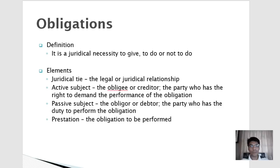First, there must be a juridical tie — the legal or juridical relationship between the active subject and the passive subject. The active subject is the obligee or creditor: the party who has the right to demand performance of the obligation. The passive subject is the obligor or debtor: the party who has the duty to perform the obligation.